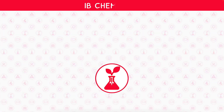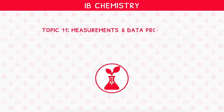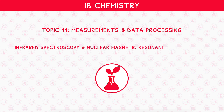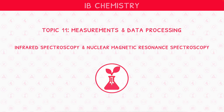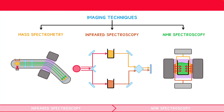Welcome back to our IB Chemistry video series. This is the third and final video in IB Chemistry Topic 11, Measurements and Data Processing, where we will be looking at infrared spectroscopy and nuclear magnetic resonance spectroscopy. In our previous video, we introduced one of the main imaging techniques used to determine the structure of organic compounds. This video will continue to describe the other two, starting with infrared spectroscopy.